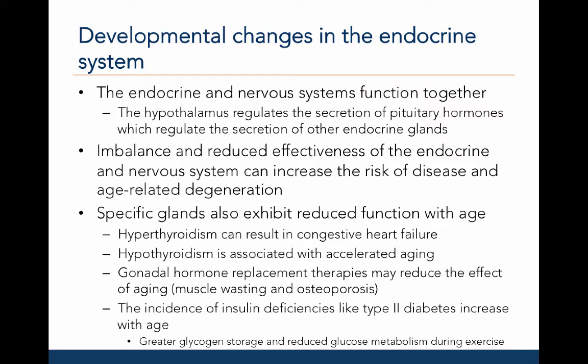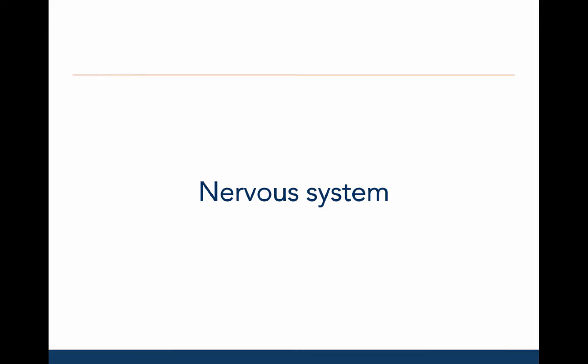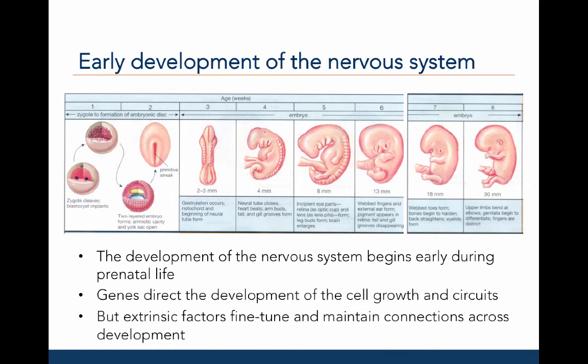In this last section, we will discuss the development of the nervous system, which is the second control system important for normal growth and development. As we saw in Chapter 4, the development of the nervous system begins early during prenatal development. By week three of embryonic development, the nervous system has started to differentiate from somatic tissue. Much of this early nervous system development is directed by genetic factors, which direct cell growth and build the basic neural circuitry.